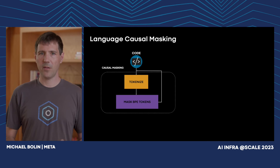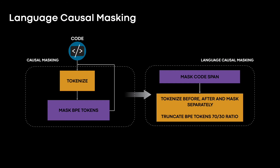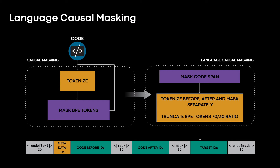To address this, we refined the training objective to something we call language causal masking, in which the code is partitioned on trigger character boundaries and the mask is selected from the resulting segments. Only after this is done do we tokenize the three segments individually: the code before, the code after, and the target code that was masked. This resulted in gains of up to 61% in offline evaluation of exact match.